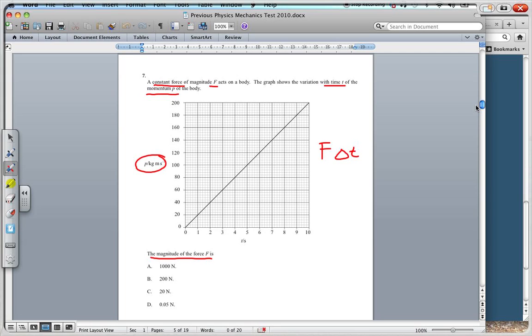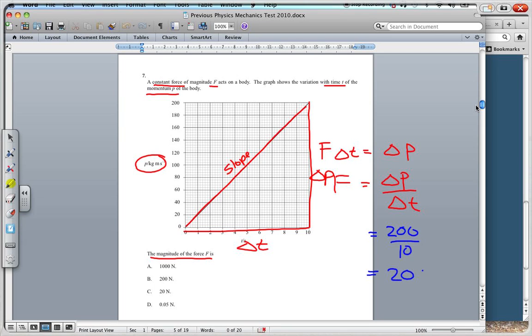That the force times the change of time is equal to the change in momentum. So, if I wanted to work out the force, I would have the change in P, the change in momentum, over the change in time. Which is the slope of this graph. Because there we have the change in momentum over the change in time. Change in P, change in T. So, I'm going to have, therefore, that the change in P, if I take the whole graph, will be 200. The change in T will be 10. So, I'll have 20 Newtons would come out there. So, we are with C.